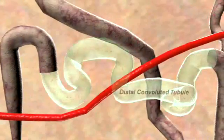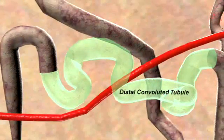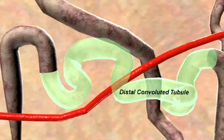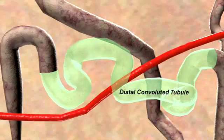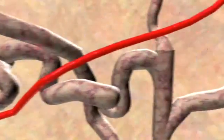The next section is called the distal convoluted tubule. This section does not allow water to reabsorb, but reabsorbs sodium through the sodium chloride ion cotransporters. The thiazide diuretics act here on this transporter.